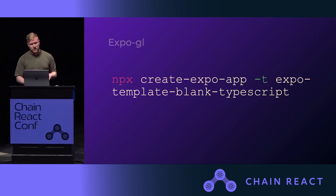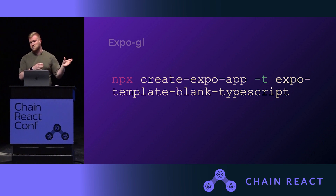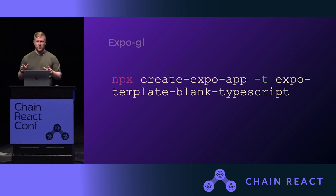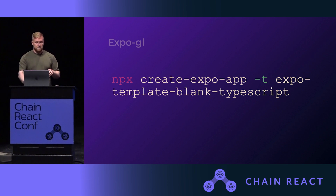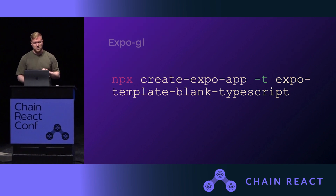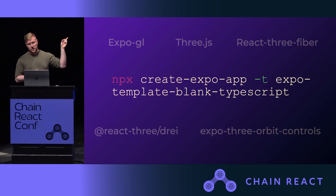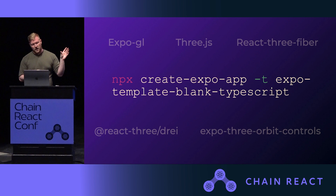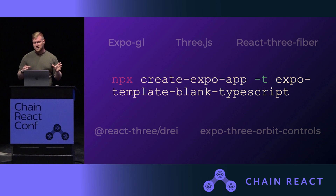How to get started with all that: the easiest way is to take a new Expo project, start from scratch, install Expo GL, and you're good to go. In reality, you probably wouldn't actually do this, and I'm soon going to show you why. If you want to add 3D graphics to a React Native app, you're going to add a lot more dependencies — not necessarily all of these, but if you end up going to production, most likely all of them. The biggest ones being Three.js and React Three Fiber, which I'm going to mention soon.